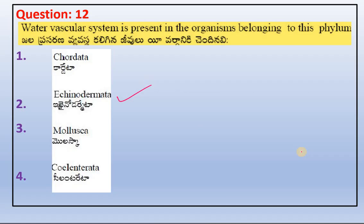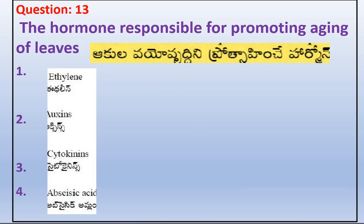The answer for water vascular system is Echinodermata. Third question: the hormone responsible for promoting aging of leaves. The correct answer is abscisic acid.